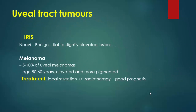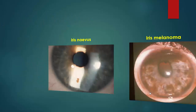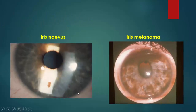Uveal tract tumors of the iris can show nevi, which are benign flat to slightly elevated lesions, or melanoma, which is a malignant tumor representing 5 to 10 percent of uveal melanoma. The age of presentation is 50 to 60 years; elevated and more pigmented lesions are treated mainly by local excision plus or minus radiotherapy with good prognosis. This photo shows an iris nevus, while here is uveal melanoma with extensive pigmented lesions involving a sector of the iris.